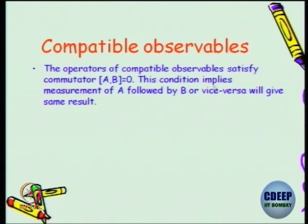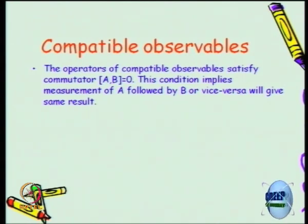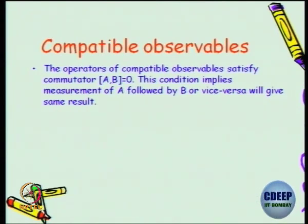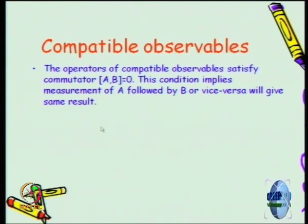This condition — what does it mean in the context of measurement? When you do the measurement on an arbitrary state psi of t, it will collapse to one of the eigenstates of that operator. So this condition implies that if you first measure operator A on an arbitrary state, it will collapse to some eigenstate of A. If you then measure operator B, the result will be the same regardless of whether you do A then B, or B then A. The order does not matter.